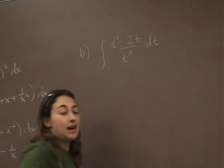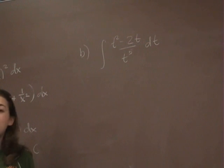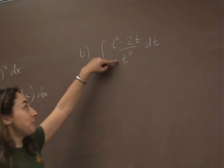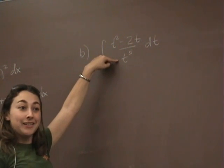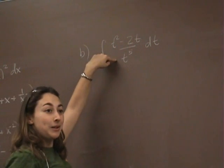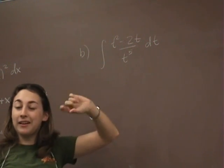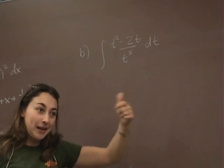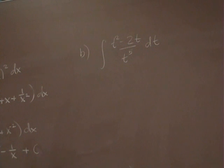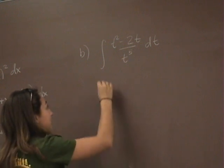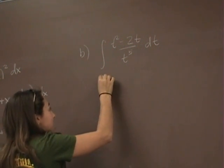Some of you thought you moved the t to the fifth up to the top. Moving the t to the fifth up to the top does not mean subtract it, nor does it mean add it. What is this t to the fifth being done? It's being divided. So you're going to move it from the denominator to the numerator. You're really multiplying, not adding or subtracting.